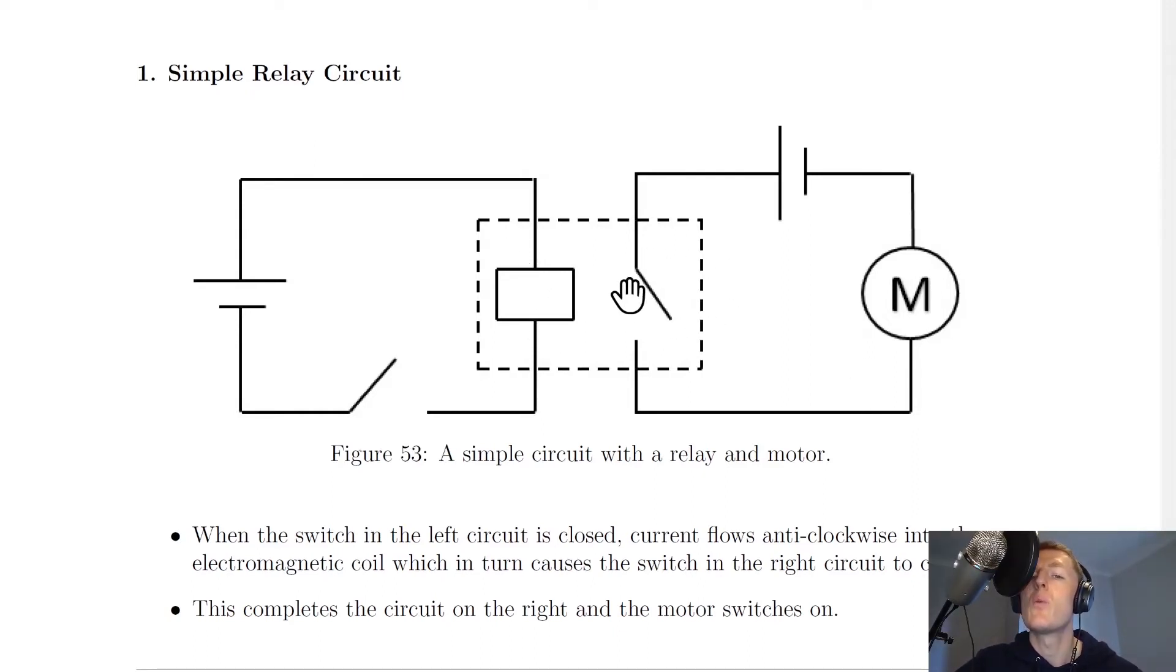Which allows the current to flow here and power on the motor. And the reason that the switch is going to close when current passes through the electromagnet is because this creates magnetic effects which pull the switch closed.